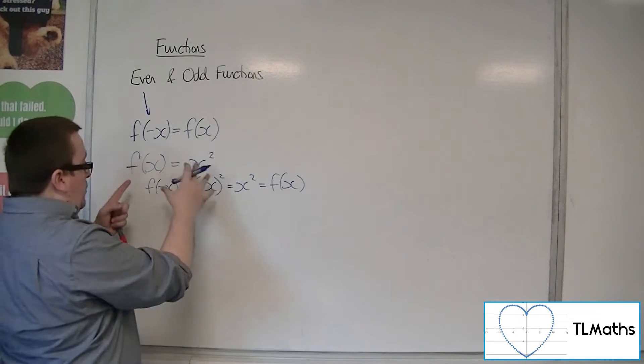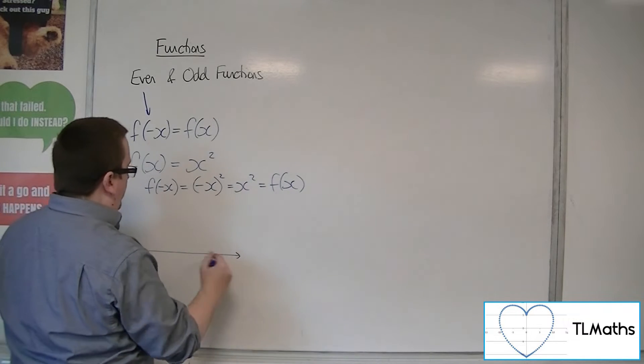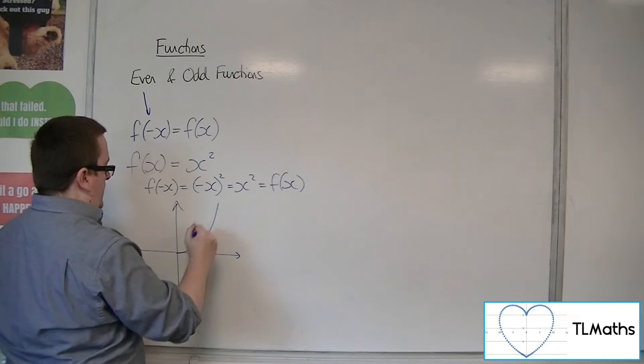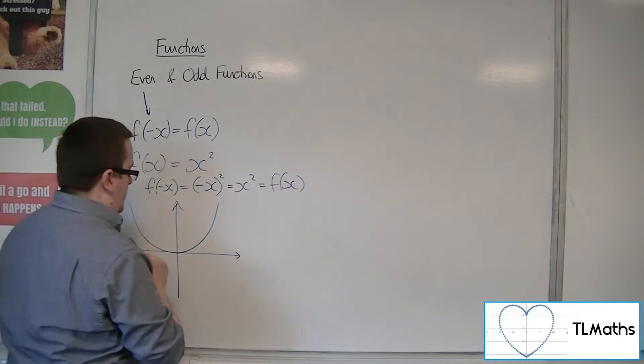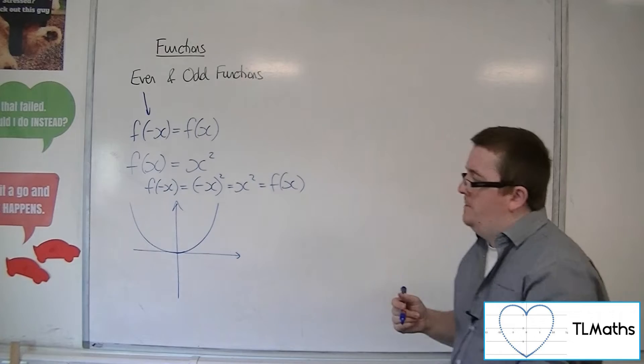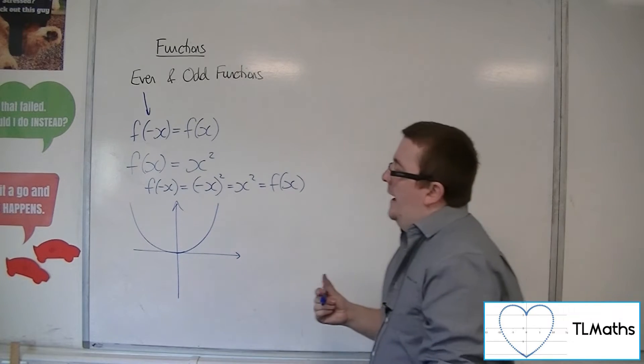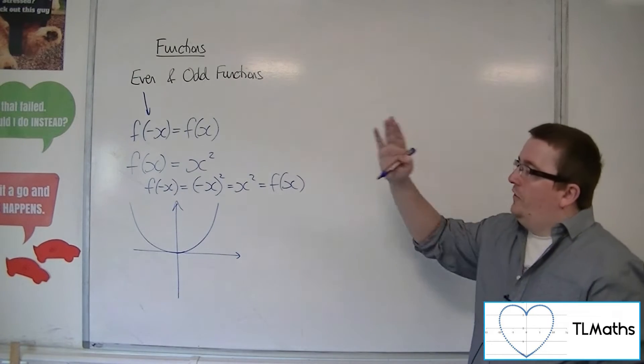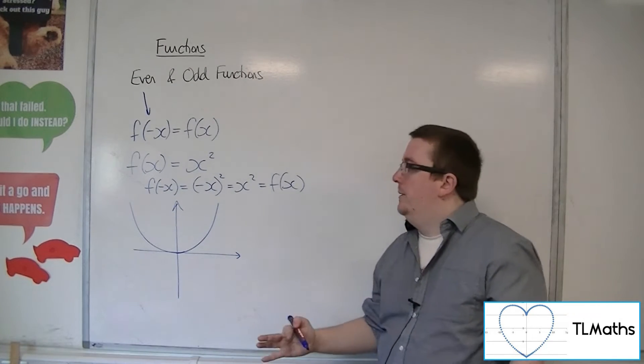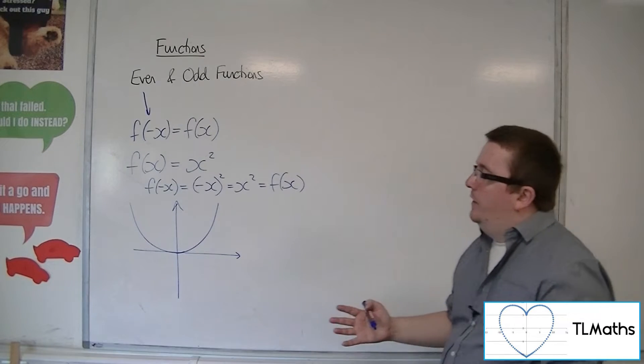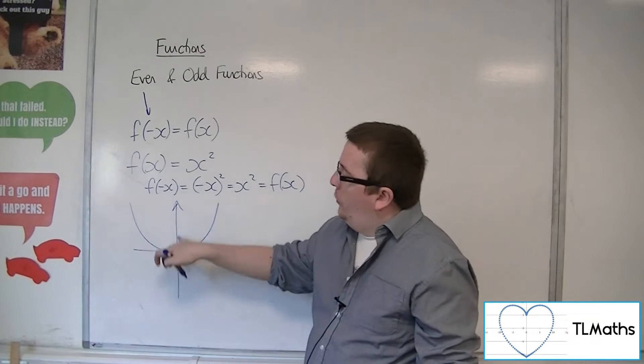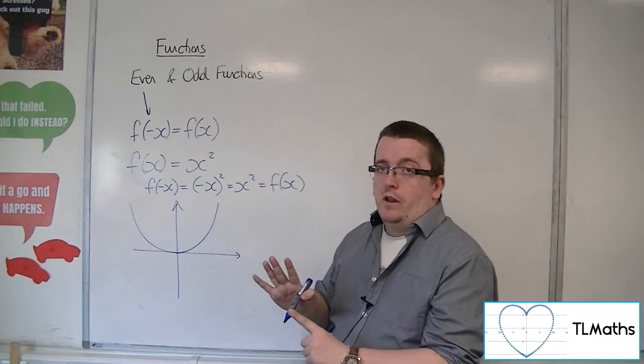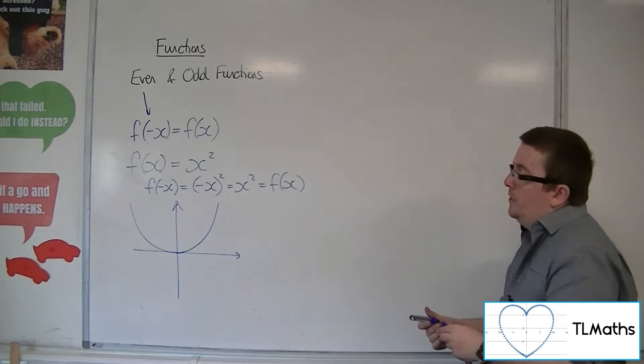Now, f of x equals x squared. What that looks like is our bog standard parabola. Okay, and what this has as a property is the fact that it has the y-axis as a mirror line, as a line of symmetry.